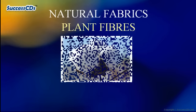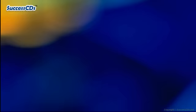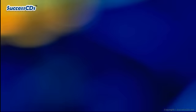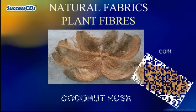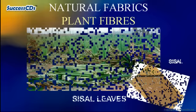Fabrics manufactured from natural fibers fall under the natural category. For example, we get cotton from cotton fibers, jute from jute fibers, linen from flax seeds, coir from coconut husk, and sisal from sisal leaves.